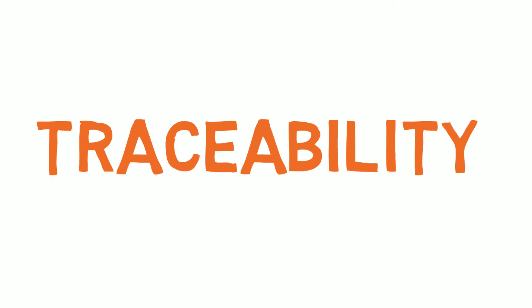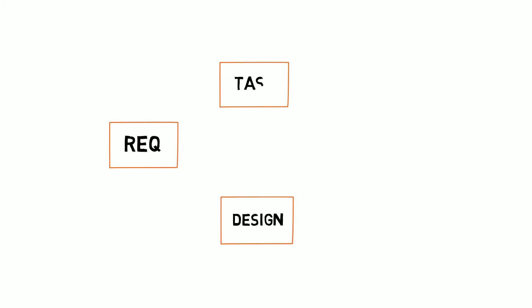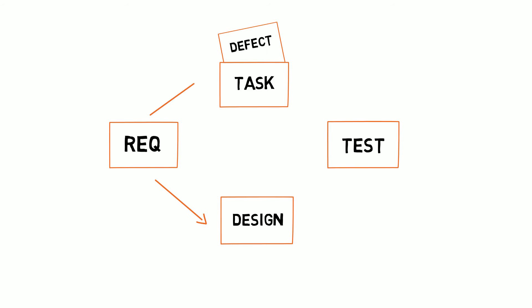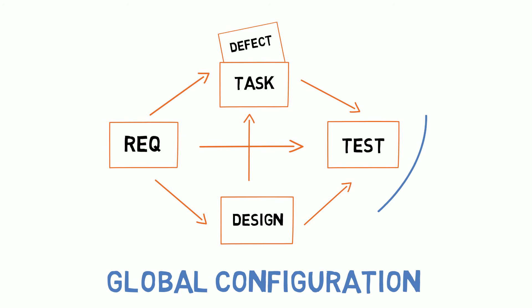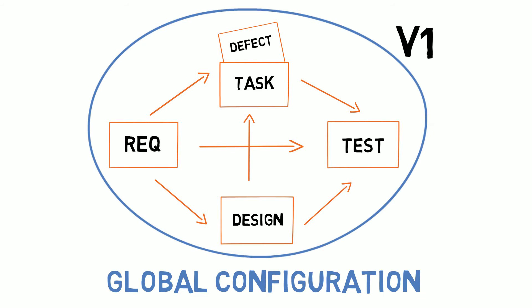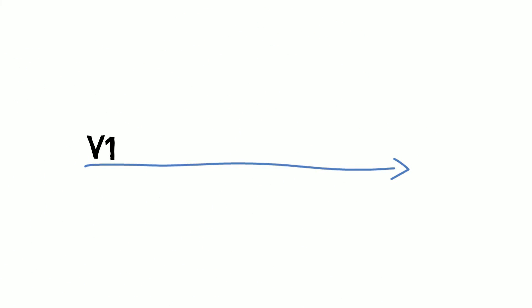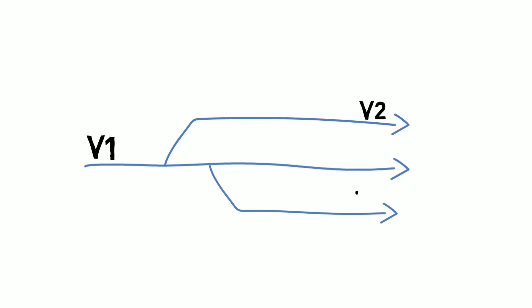The most important benefit of using CLM platforms is traceability and impact analysis across the platform, from requirements and design artifacts to tests and implementation tasks. Global Configuration support for variance management and handling — GC provides versioning and branching of requirements and test artifacts, and cross-platform branching of linked requirements, design, implementation tasks and defects, source code, and test artifacts.